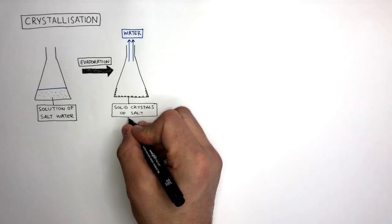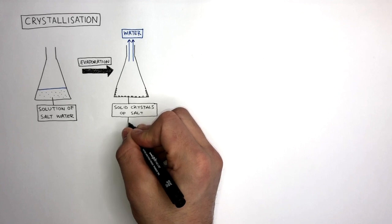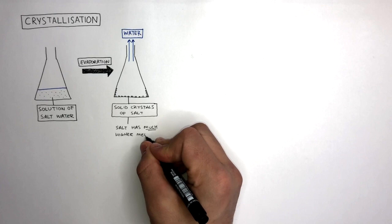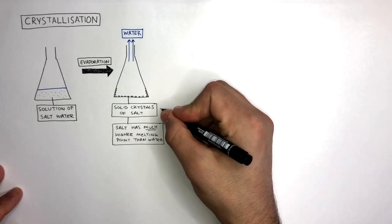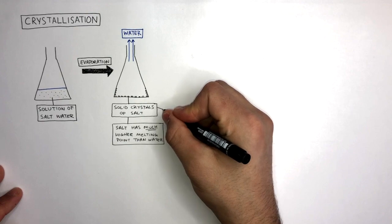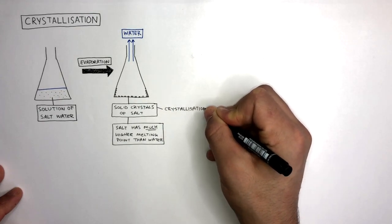The salt does not evaporate at room temperature because the salt has a much higher melting point than water. So when salt crystals form because the water has evaporated, this process is known as crystallization.